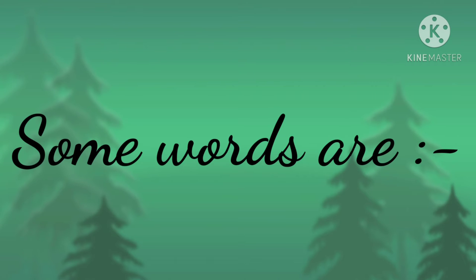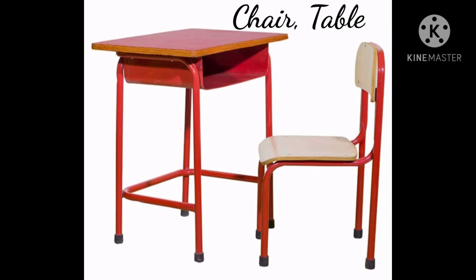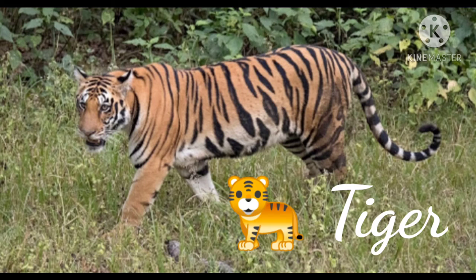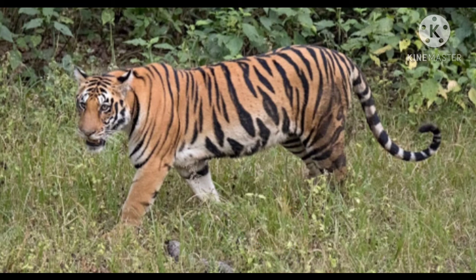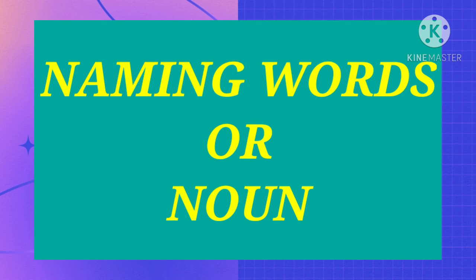Today I am going to discuss some words with you like chair, table, Kapoor Thala, Taj Mahal, parrot, tiger, Bhagat Singh, Anita. So these words are known as naming words, or noun.